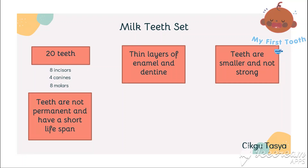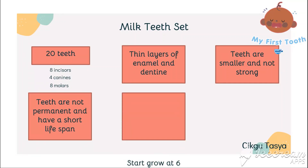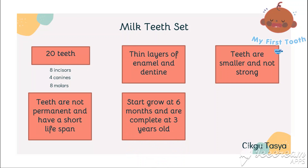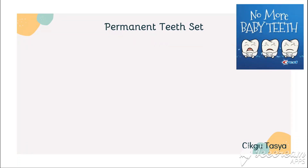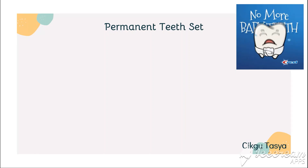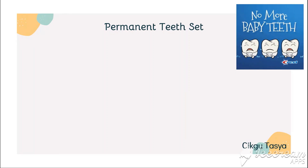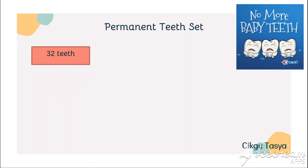Milk teeth start to grow at six months old, when we are babies, and are complete at three years old. Now let's look at the permanent teeth set.